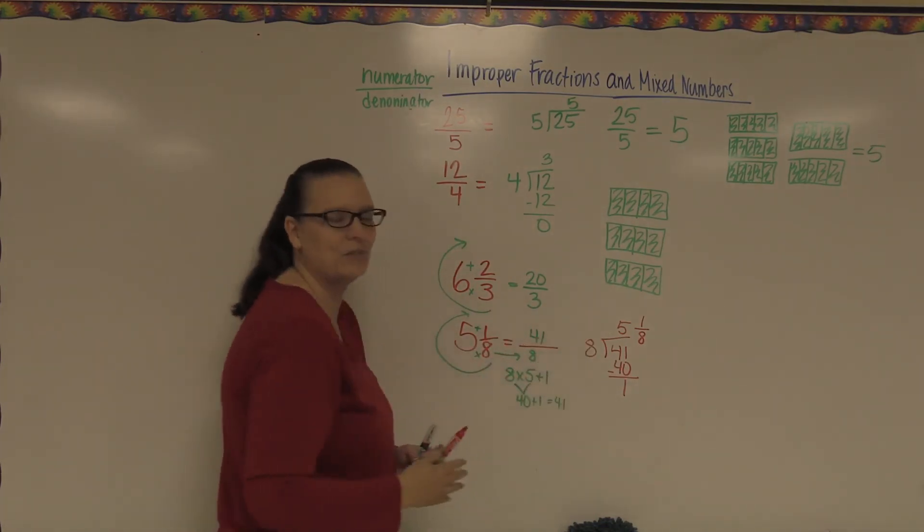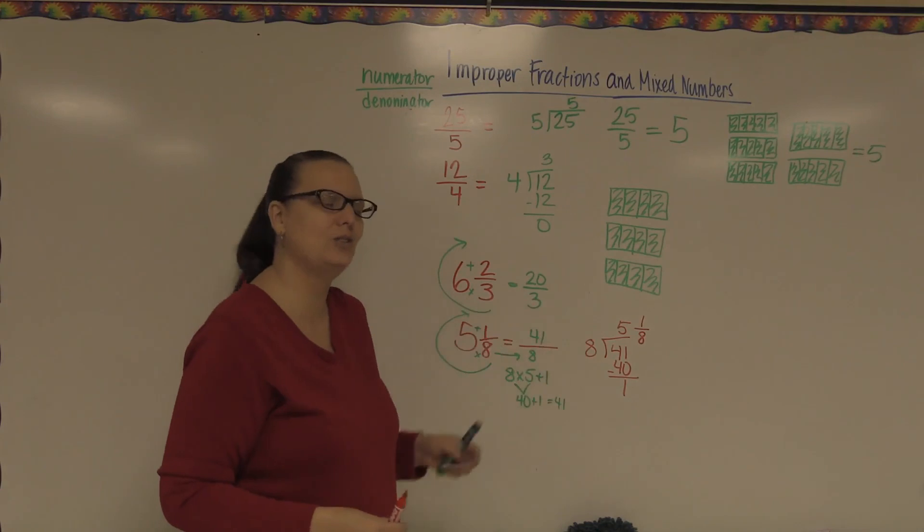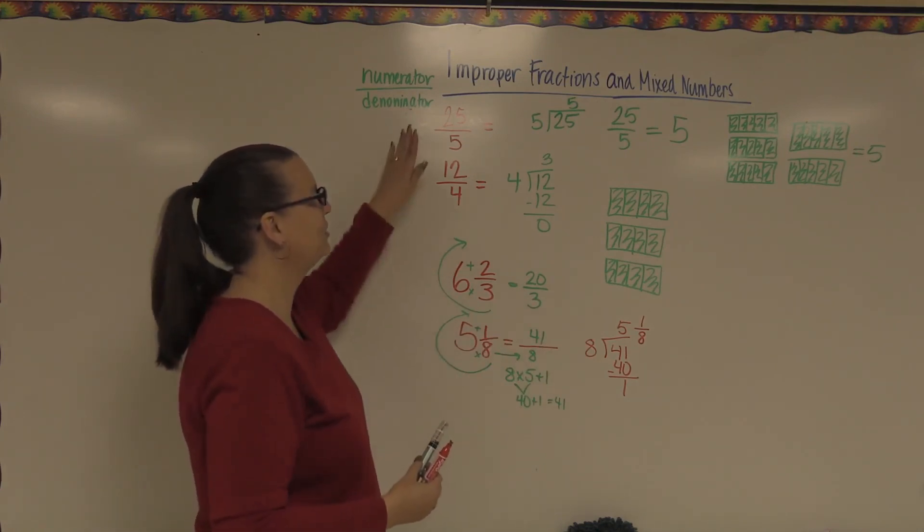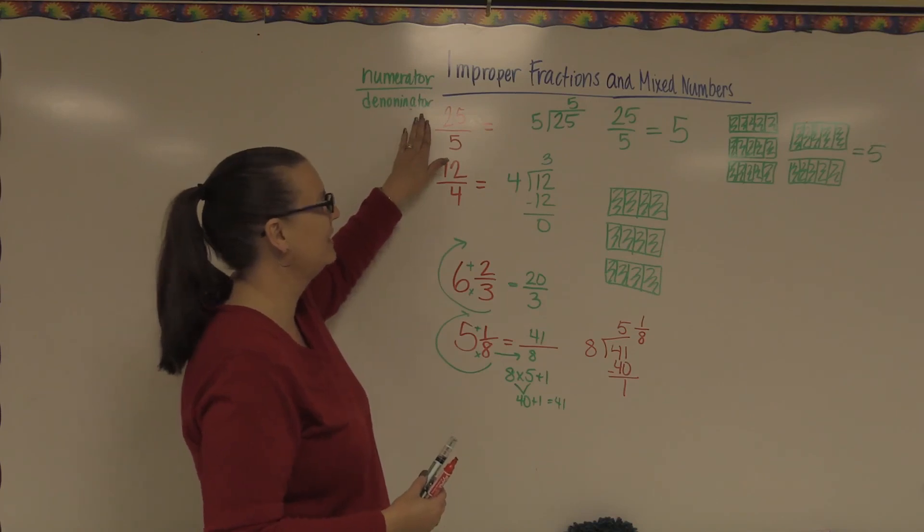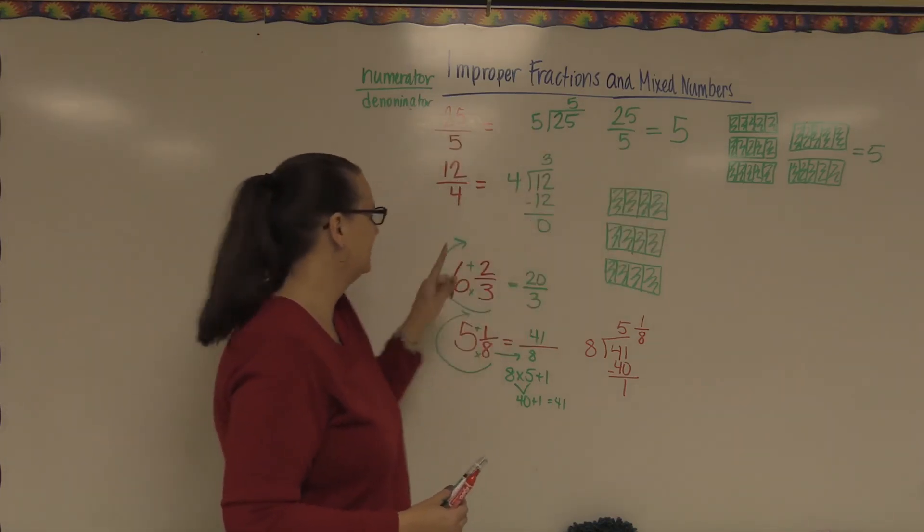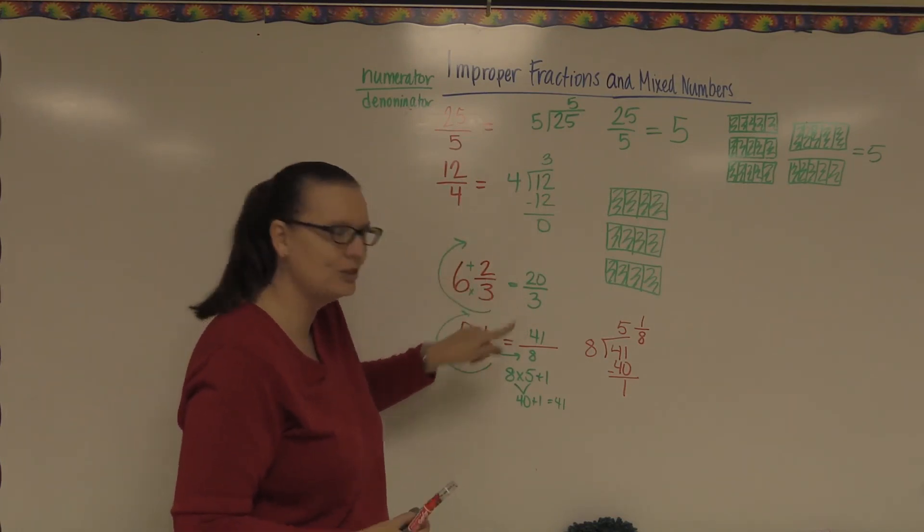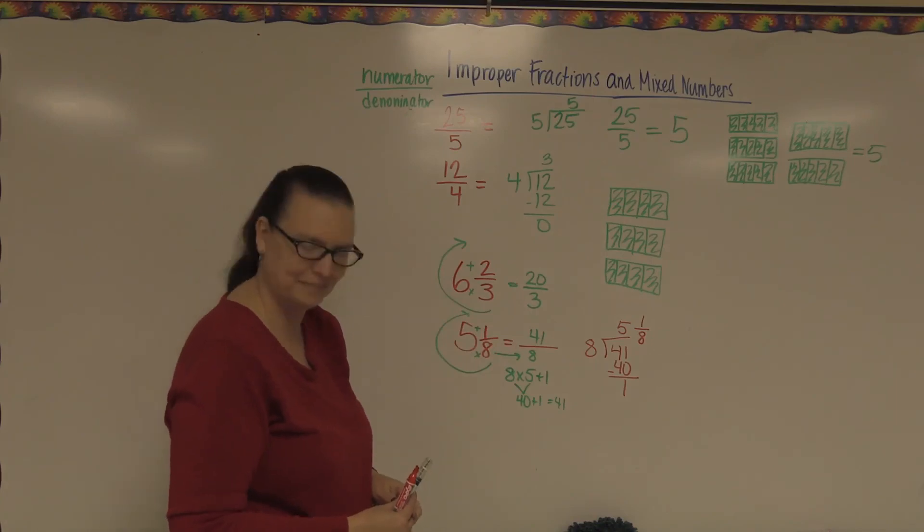This is not something you're going to have to be doing on your own just yet. I just wanted you to see how it worked to make sure that we had a way to check our problems. So we should be able to take an improper fraction and turn it into a mixed number. We should be able to take a mixed number that has a whole number and a fraction and turn it into an improper fraction. There you go.